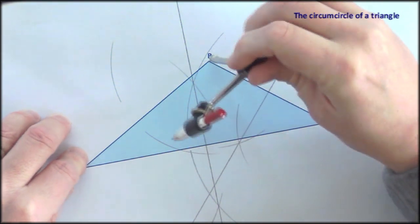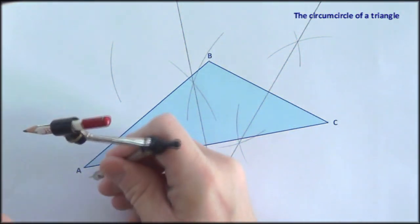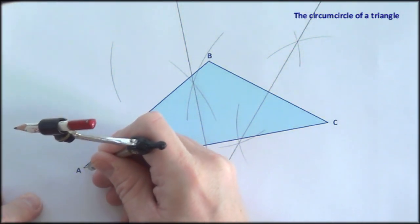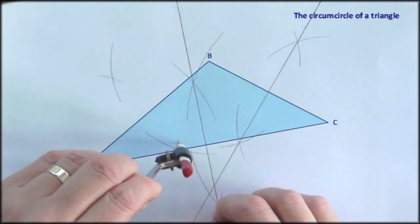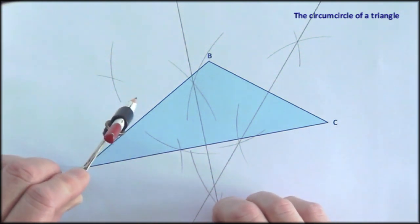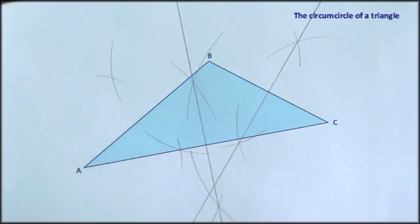Arc above and below, point on to A. Cross those over. By complete coincidence those two have intersected on AC. It doesn't matter.